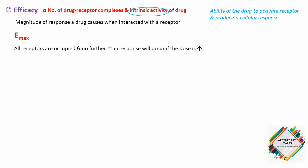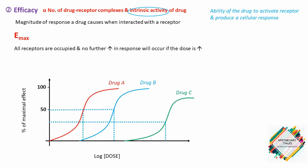Observing the graph, we have drug A, drug B, and drug C with different EC50s. Drug A is more potent than drug B, but both show the same efficacy — drug A produces 50% of the maximal effect at a lower dose than drug B, but the maximal effect produced by both drugs is the same. Drug C shows lower potency and lower efficacy than both drug A and drug B.